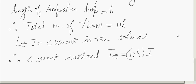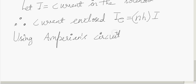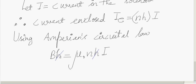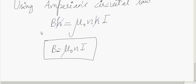Therefore, applying Ampere's circuital law, using Ampere's circuital law, we can write we got it as B into H will be equal to μ₀ times IE. What is IE? NH into I. Here H and H will get cancelled. You can cancel H and H. Therefore, you get B is μ₀NI. This is the magnetic field inside the solenoid.